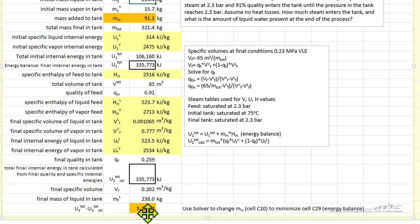And you can see the difference is extremely small. So very quickly, Solver found the solution - 91.3 kilograms. And the quality, 0.259. And once we have that quality, of course, we can calculate the final mass of the liquid. And that's the 238 that I've shown here.